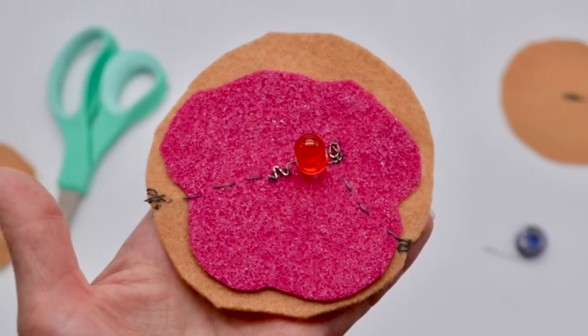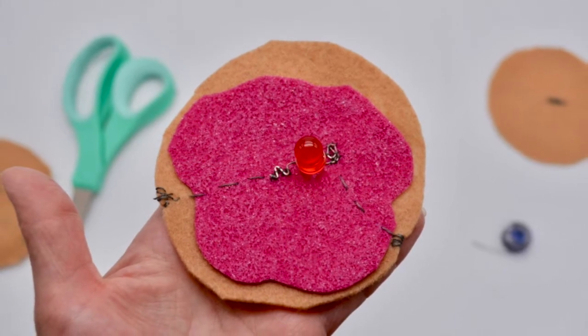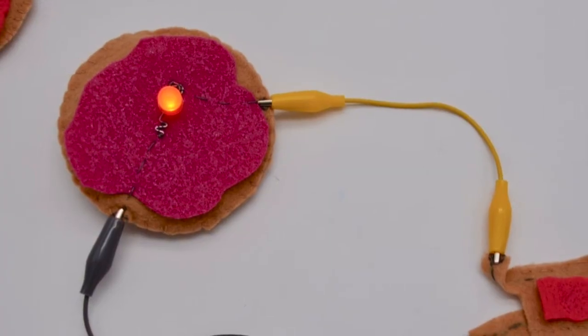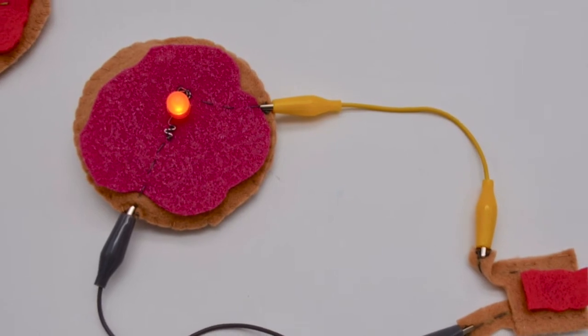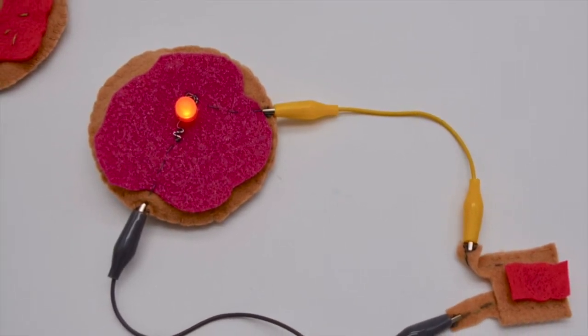Make sure that this is not one continuous thread from the positive to the negative otherwise your LED won't light up. Now it's time to test it with your battery pack. Make sure you hit the positive to the positive and the negative to the negative.